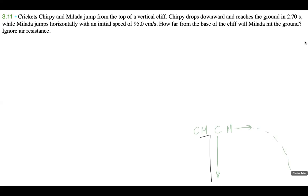Chirpy just drops downwards, and Milada jumps horizontally, which means that assuming they're on planet Earth, there's going to be some acceleration in the y direction. Let's say this is positive x and this is positive y. Chirpy goes straight downwards, and Milada moves in this projectile motion, two dimensions.